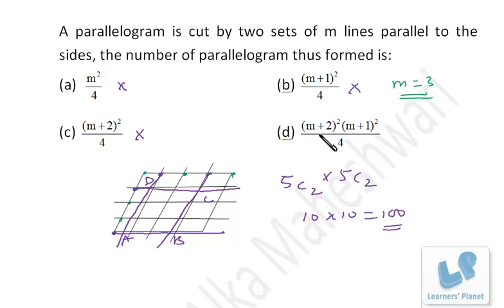Obviously this is correct because it is the last option. Let's just put the value: m is equal to 3, so 3 + 2, 5 squared, that is 25, into 3 + 1, that is 4 squared, that is 4 into 4, by 4. So it's 100.